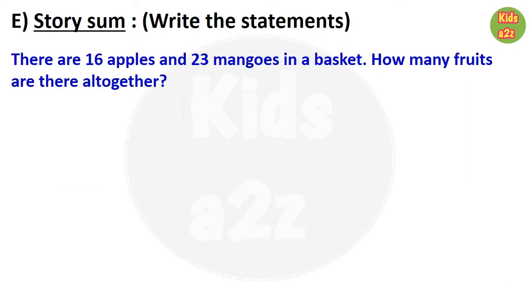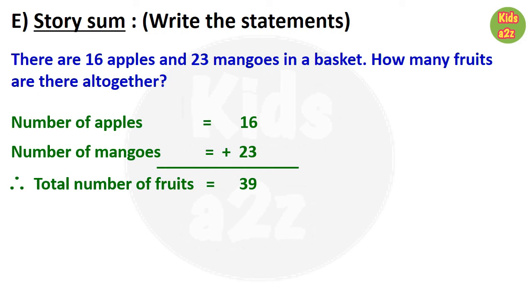Next question is: there are 16 apples and 23 mangoes in a basket. How many fruits are there altogether? So to solve this problem, kids need to write: number of apples equals 16, number of mangoes equals 23. Here we need to find how many fruits are there altogether. That means we need to do addition. Therefore, total number of fruits equals 39. And they need to write the answer like: 39 fruits are there altogether.